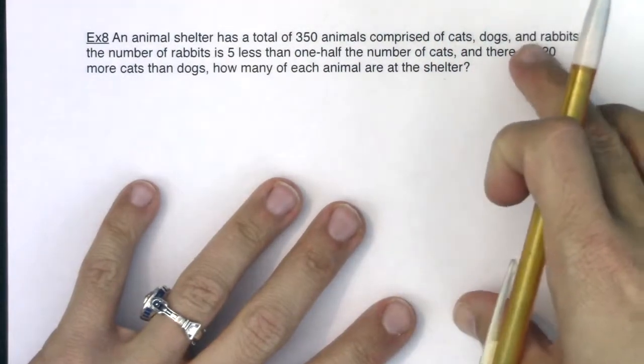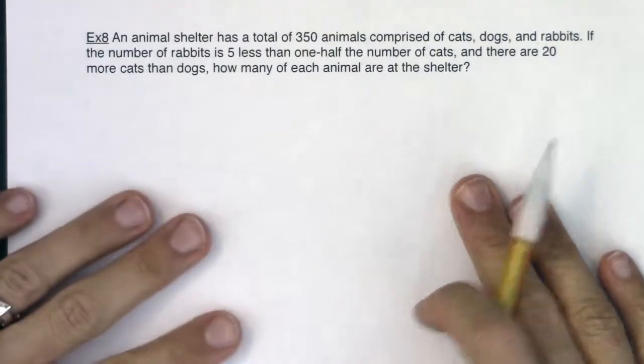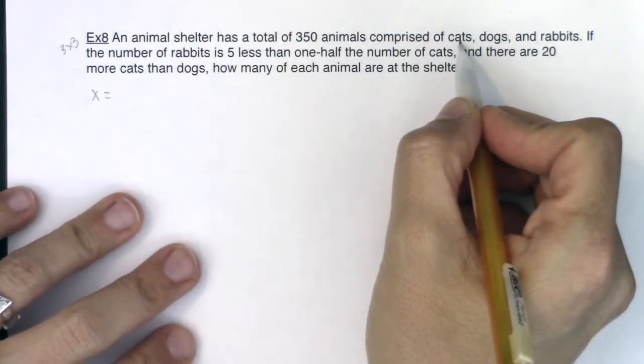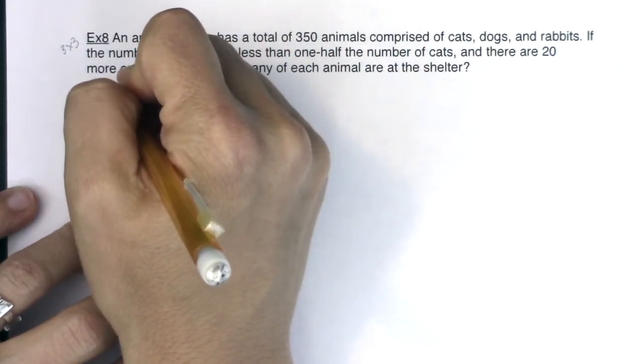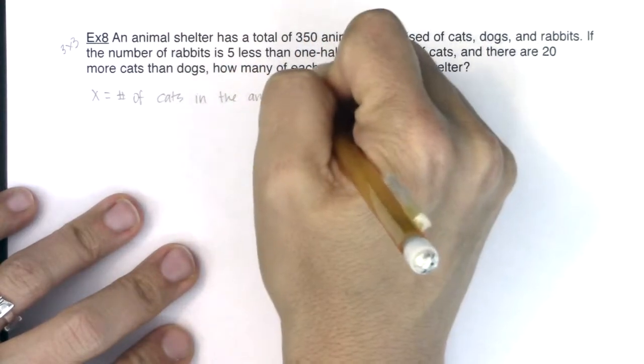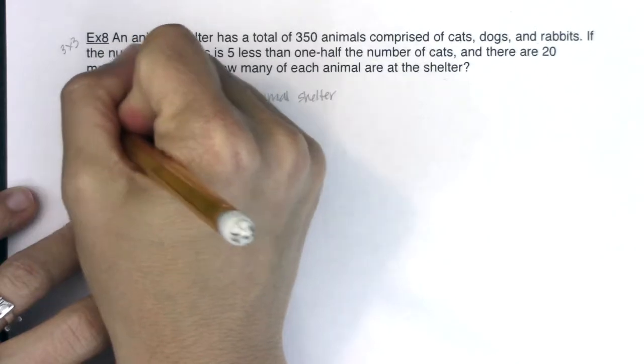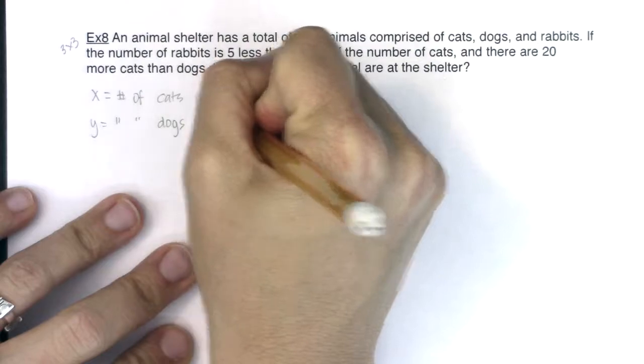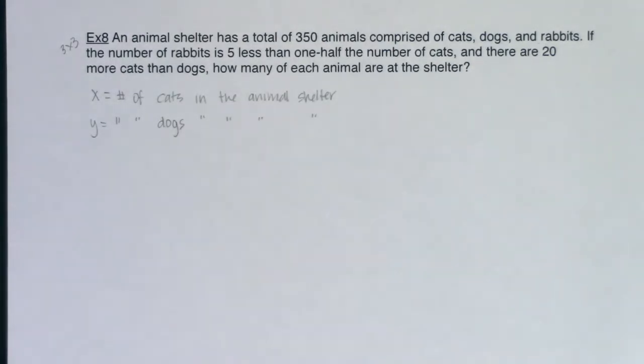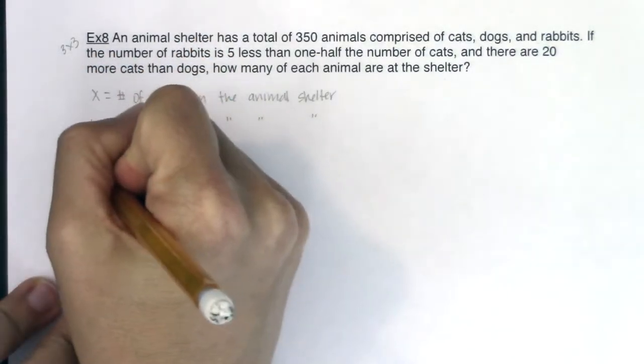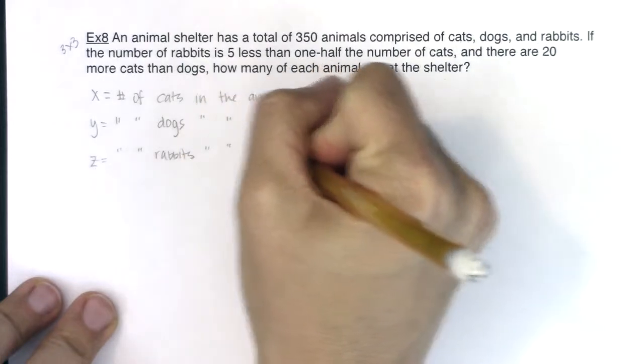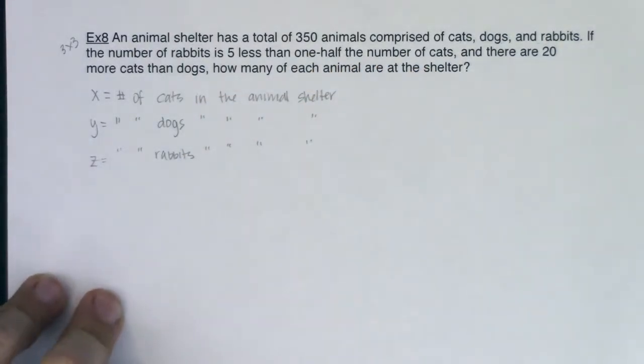As soon as I identify three variables, I need to find three equations so I can get my three by three system. I'm going to start naming variables. Let x be the number of cats in the animal shelter. I will let y be the number of dogs, and z looks like it's the number of rabbits.